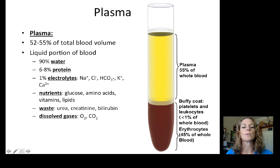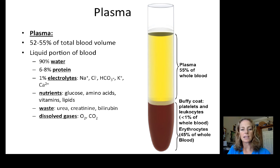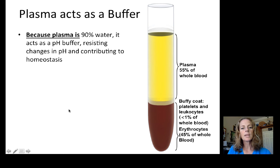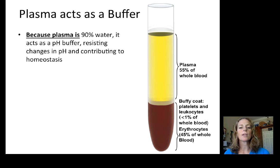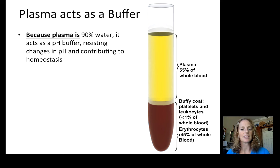Plasma is 52 to 55% of total blood volume. It is the liquid portion of blood: 90% water, 6 to 8% protein, and about 1% electrolytes — sodium, potassium, chloride, etc. — plus many nutrients, glucose, amino acids, waste, and dissolved gases. Because plasma is 90% water, it acts as a pH buffer, helping to maintain the blood's neutral pH.